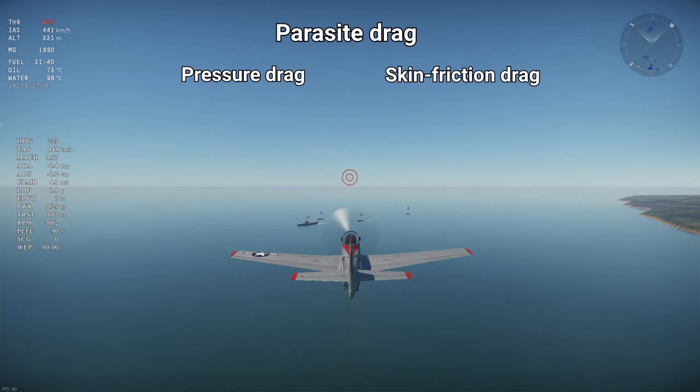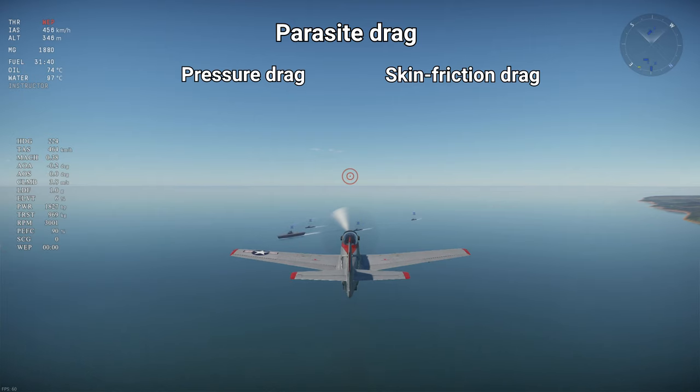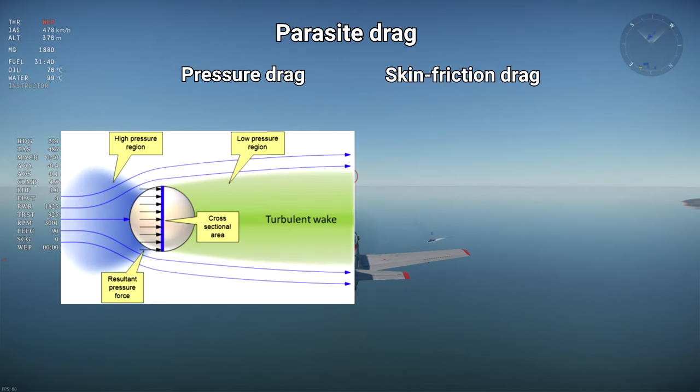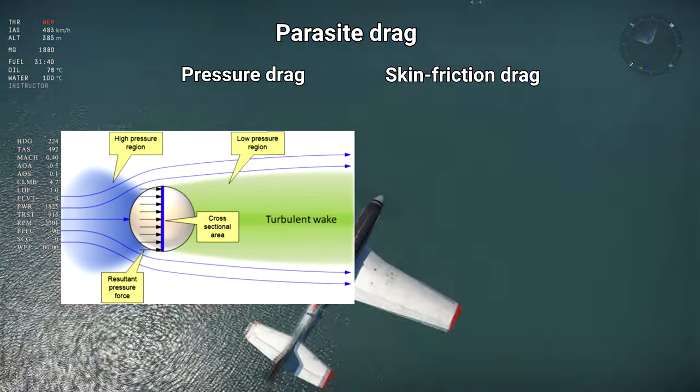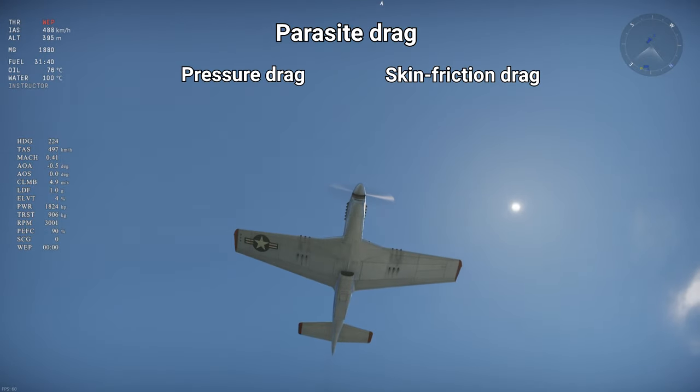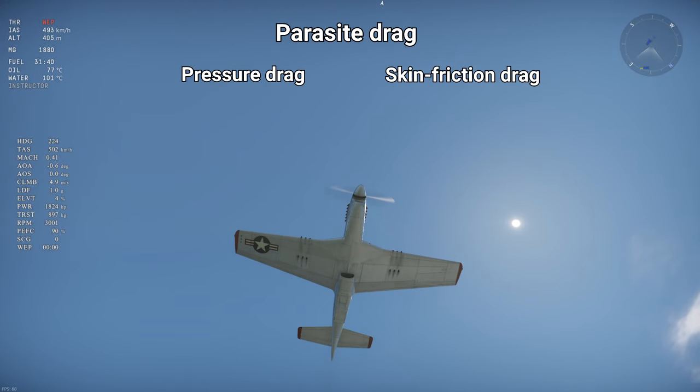However, aircraft have a lot of surface area that is exposed to air and they move at high speed, making skin friction drag a big component of drag for aircraft. For blunt bodies, pressure drag is the main component of parasite drag, while for slender bodies like wings and well-designed aircraft, skin friction drag is the main component of parasite drag.